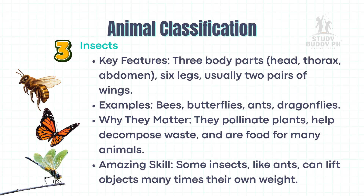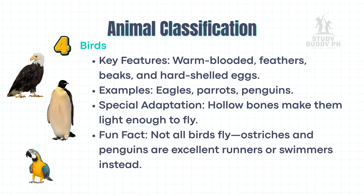Insects: Key features — three body parts: head, thorax, abdomen; six legs; usually two pairs of wings. Examples: bees, butterflies, ants, dragonflies. Why they matter: they pollinate plants, help decompose waste, and are food for many animals. Amazing skill: some insects, like ants, can lift objects many times their own weight.